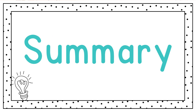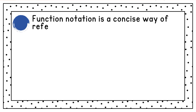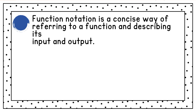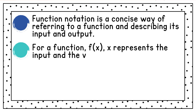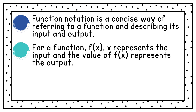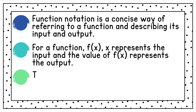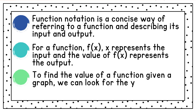Let's recap what we've learned. Function notation is a concise way of referring to a function and describing its input and output. For a function f of x, x represents the input and the value of f of x represents the output. To find the value of a function given a graph, we can look at the y value at the given x value.